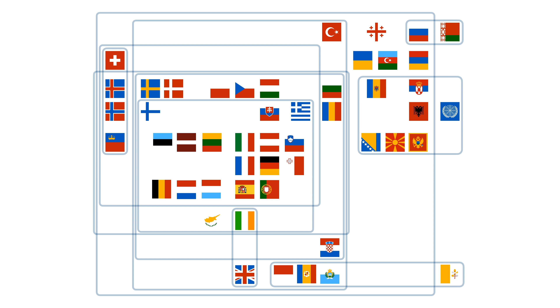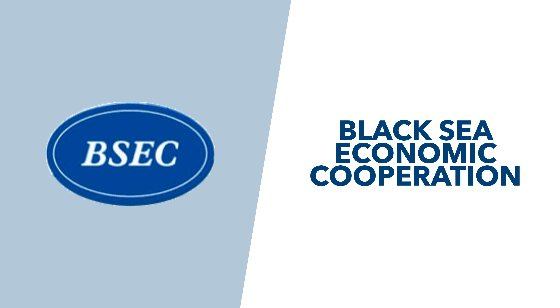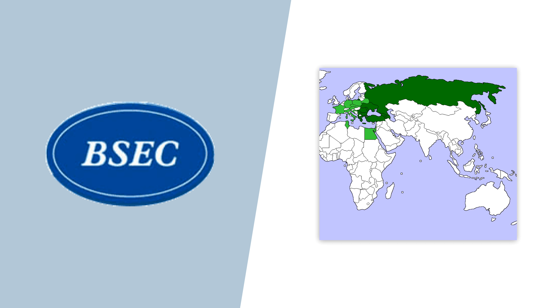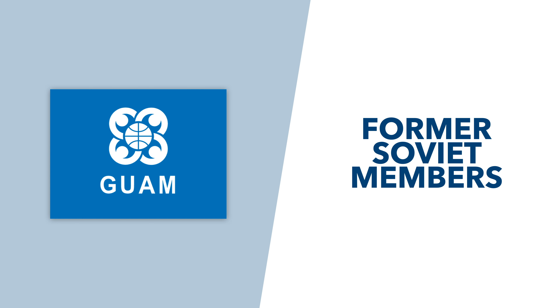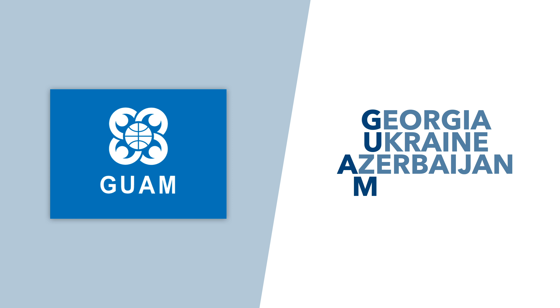You still ready for a lightning round to really clutter up this diagram? Let's loop back to these countries and connect them with EU members via the Organisation of the Black Sea Economic Cooperation, a unique and promising model of multilateral political and economic initiative, consisting of the countries in and around the Black Sea. Within that grouping, you've also got the GUAM Organisation for Democracy and Economic Development. GUAM gets its name from its member states, the four former Soviet states of Georgia, Ukraine, Azerbaijan, and Moldova.